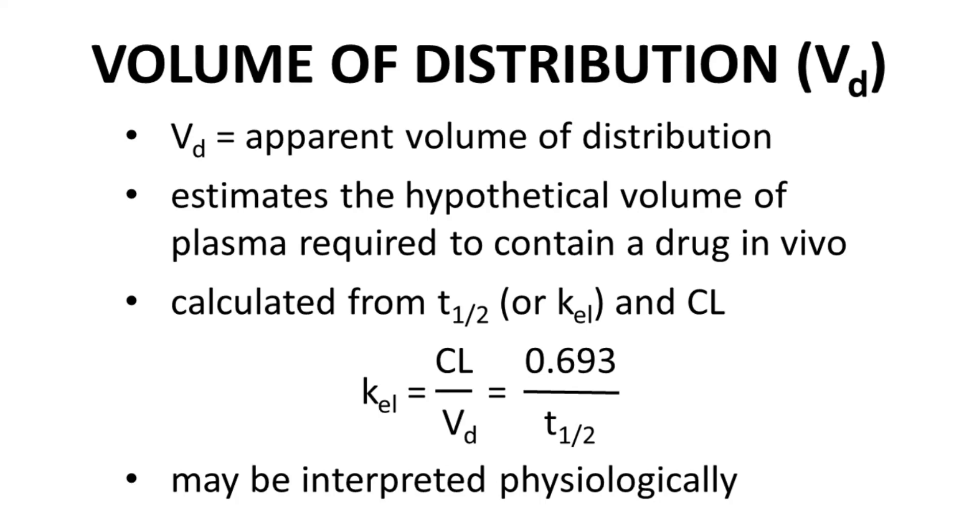A drug with a lower VD will be more concentrated in the bloodstream. A higher volume of distribution implies that the drug has distributed more into the different tissues of the body.